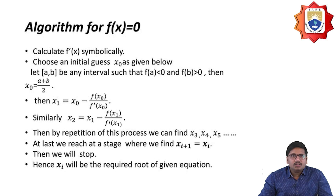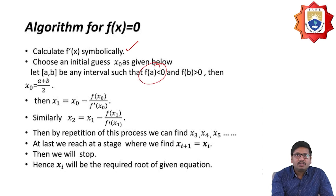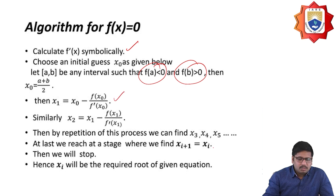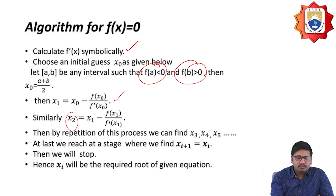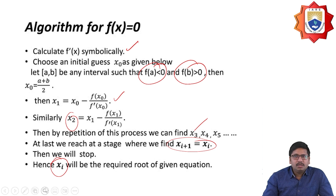The algorithm for f(x) equal to 0: first, calculate f'(x) symbolically. Then choose an initial guess x naught — let [a, b] be an interval such that f(a) and f(b) have opposite signs, and set x naught equal to (a plus b) divided by 2. Then x1 equals x naught minus f(x naught) divided by f'(x naught). Repeat this process to get x2, x3, and so on. When xi+1 equals xi, then xi is the required root of the given equation.